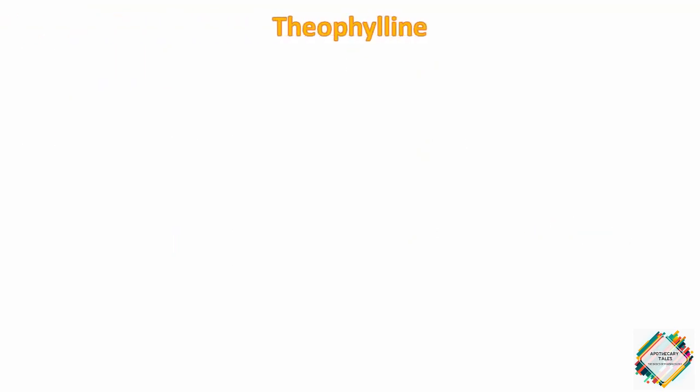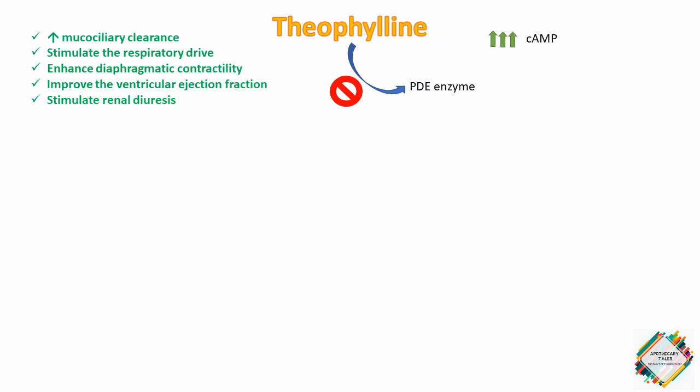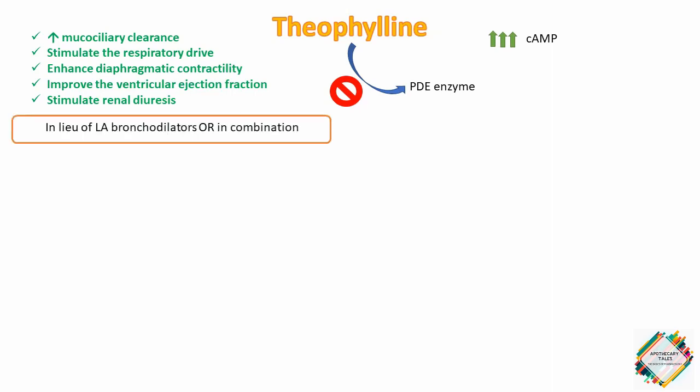Theophyllin compounds are typically added to the drug regimen after an unsuccessful trial of ipratropium bromide and beta-adrenergics. Theophyllin appears to have a greater clinical role in COPD than in asthma. Theophyllin basically inhibits the PDE enzyme and is responsible for increasing mucociliary clearance, stimulating respiratory drive, enhancing diaphragmatic contractility, improving ventricular ejection fraction, and stimulating renal diuresis. Its bronchodilator properties are modest at best.